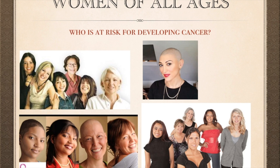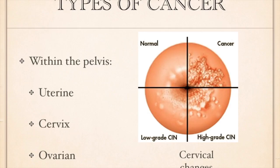The younger one is, the less likely to develop certain types of cancer when it comes to the reproductive tract. When learning about cancers in women, they can be differentiated by anatomy — those within the pelvis and those outside of the pelvis.